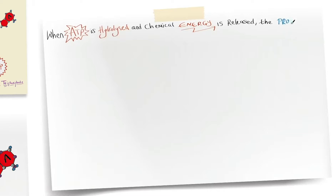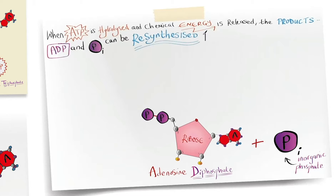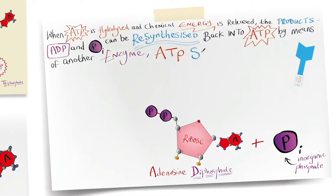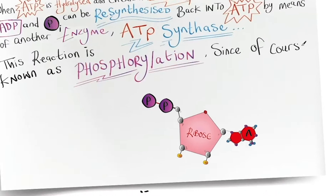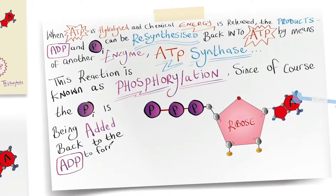When ATP is hydrolyzed and chemical energy is released, the products — ADP and inorganic phosphate — can be resynthesized back into ATP by means of another enzyme, ATP synthase. This reaction is known as phosphorylation, since the inorganic phosphate is being added back to the ADP to form a molecule of ATP. So the ADP has been phosphorylated.